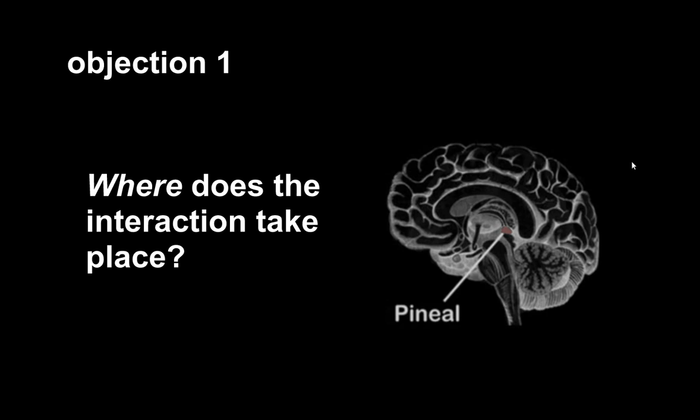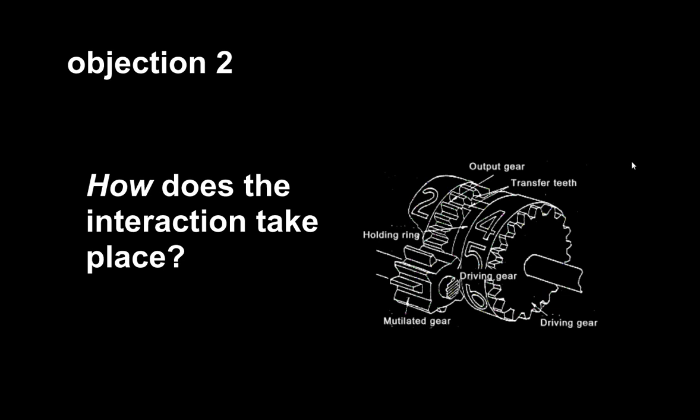Second objection is, how does the interaction between mind and body take place? Now look, if you're asking for some kind of mechanism, like you see in this chart for some machine, well, there isn't going to be anything like that. No dualist has ever put forward anything like that, and it seems that none is forthcoming.